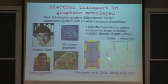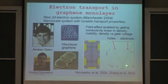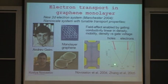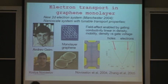They were able to show a very important result: that there's a field effect in graphene. What that means is that by applying a gate voltage to a graphene sheet, you can have electron transport in one region when you apply a positive gate voltage, and you can have hole transport in the negative gate voltage range. So in one system you have electron and hole transport by applying the appropriate gate voltage. That was a very important result.